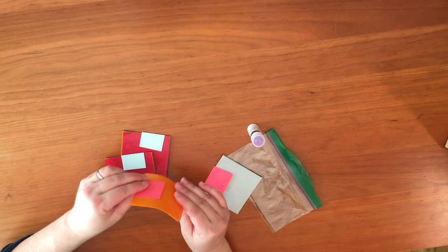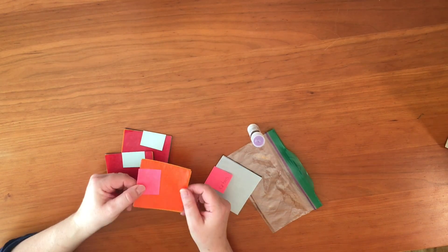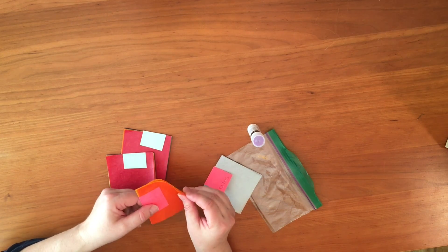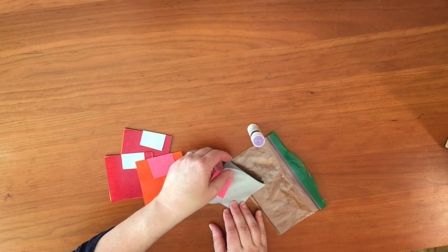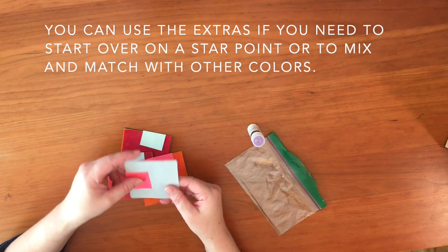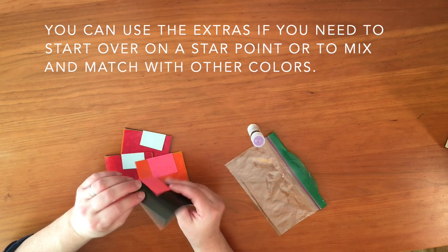The third bundle is random. It could be all one color or it might be half and half. This particular bundle is half yellow and half orange. And your last bundle are your extras and that has two sheets of white and two sheets of brown.